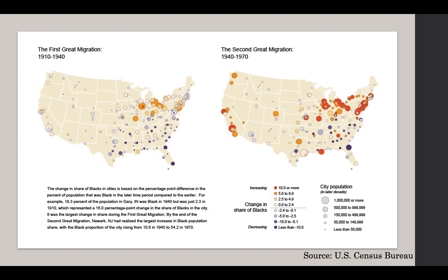These two maps show us two major waves—the Great Migration before and after 1940. The blue dots on these maps are the locations that African Americans were leaving, the towns and cities that had a net loss in their African-American population. The orange and red circles are the ones that have a net gain. And you can see, if you're familiar with the U.S. map, you can kind of see where things are going.